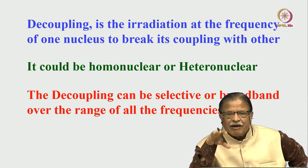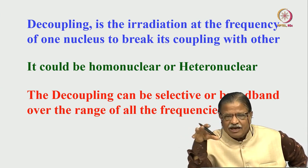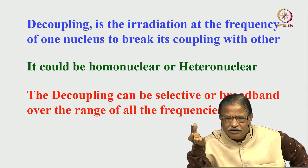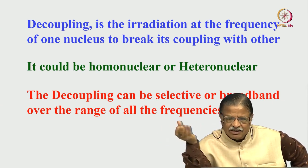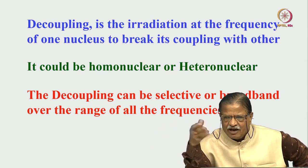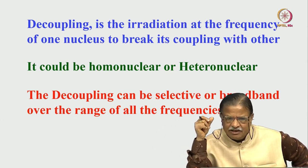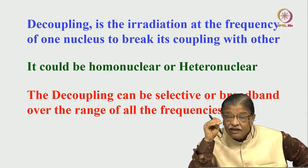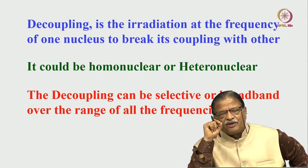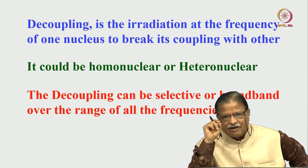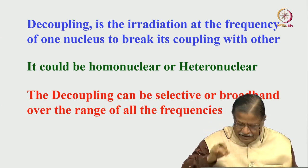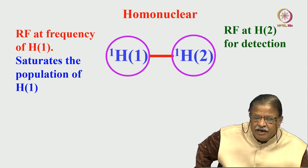Selective decoupling was used in the old days to understand which spin is coupled to which. That approach has now been replaced by two-dimensional COSY, where you get correlation information showing which spins are coupled and sit next to each other — all of which we discussed in COSY, TOCSY, etc. In the homonuclear case, the old method was selective decoupling.